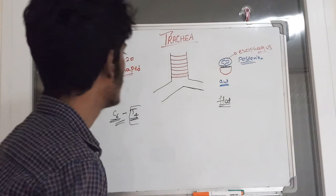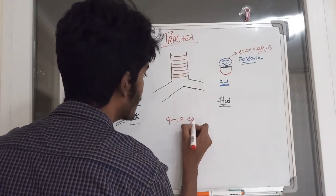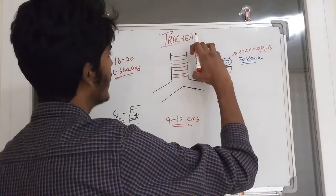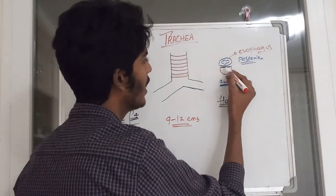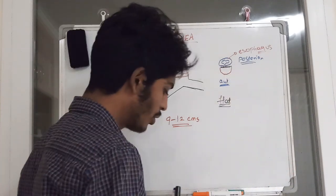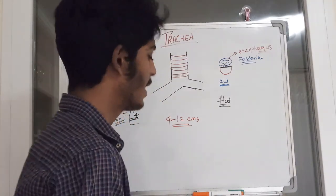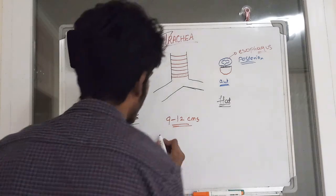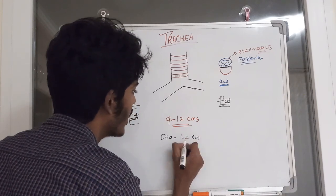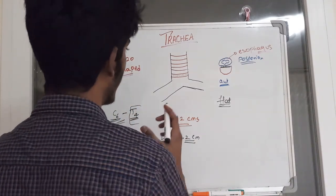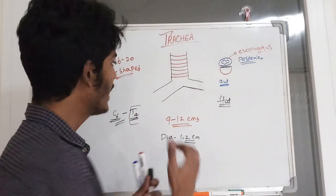The length of the trachea is about 9 to 12 centimeters. The diameter of the trachea varies according to age — in an adult, the diameter is about 1.2 centimeters.